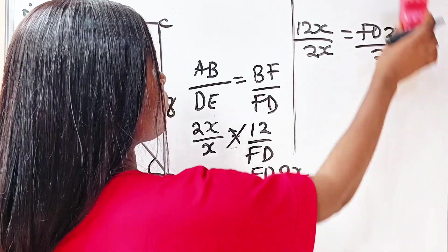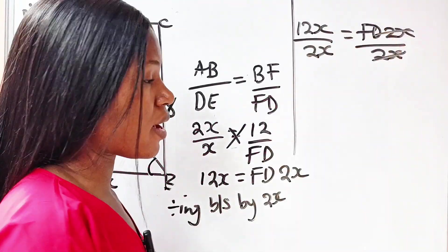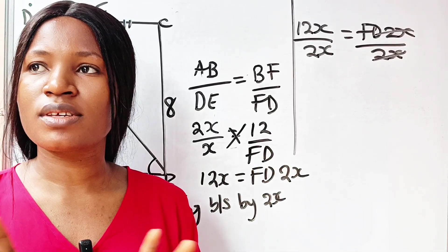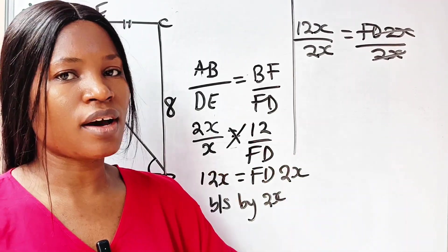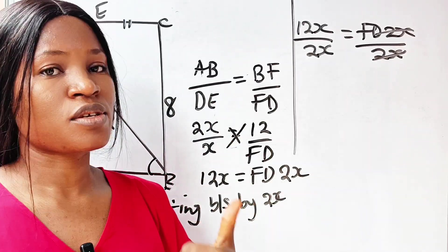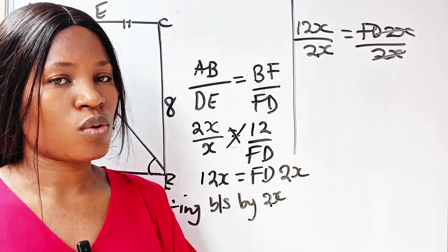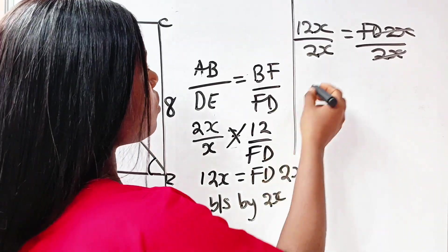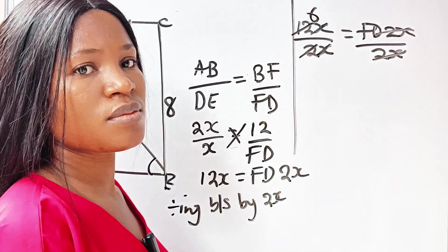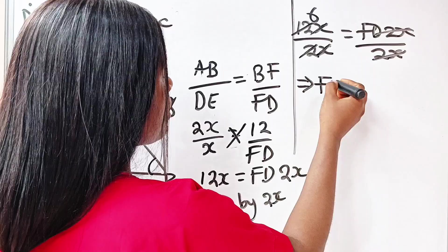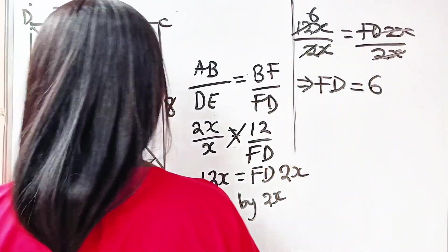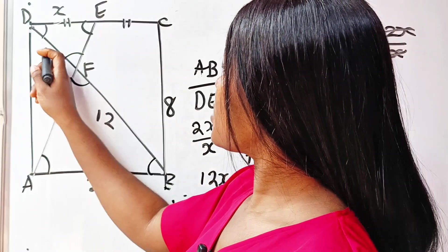We will have 12x over 2x is equal to FD. Before that, please hit the subscription button and turn on your notification bell so that you don't miss our lovely videos. We upload videos as often as possible. Now give us a thumbs up if you actually love what we are doing. So from here we have x, we remove x, and 2 we divide 12 to give us 6. So this implies that FD is equal to 6.